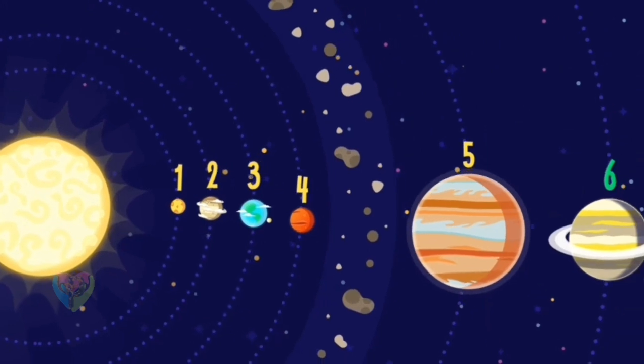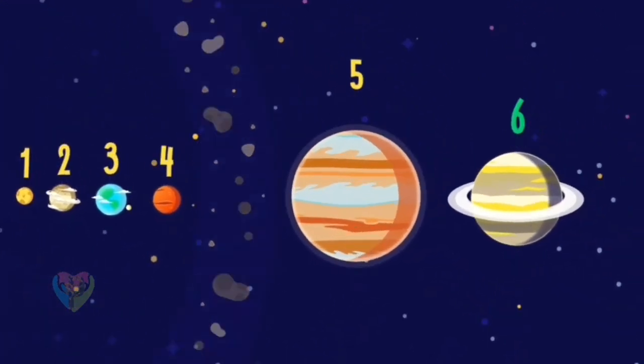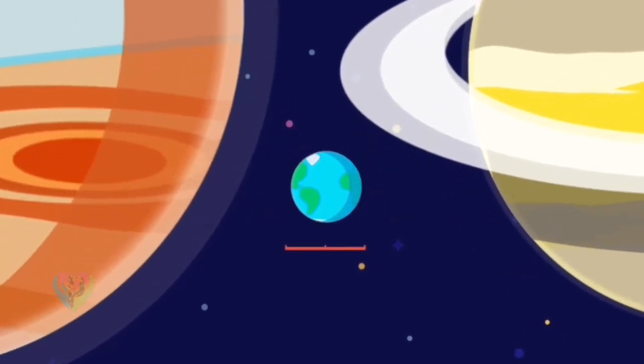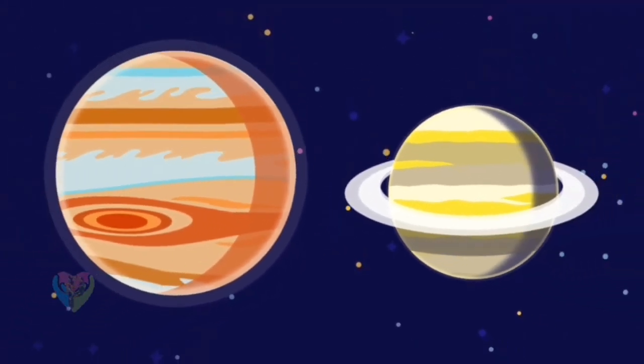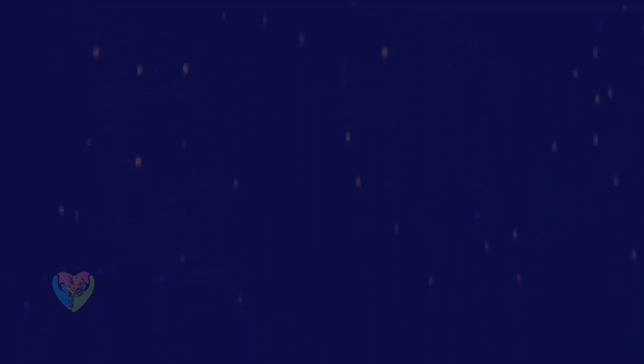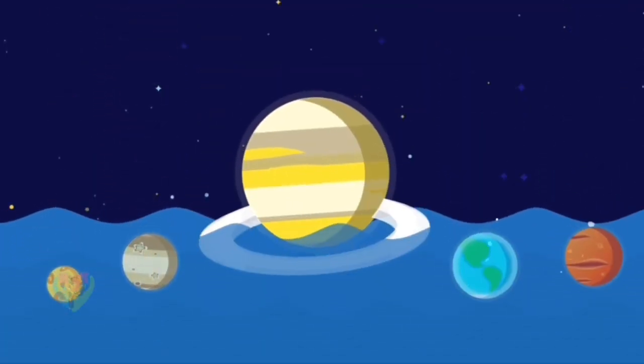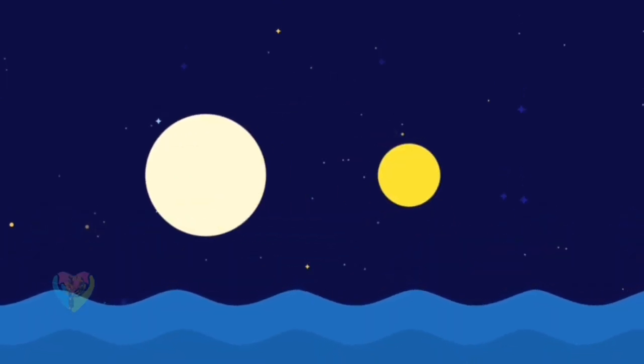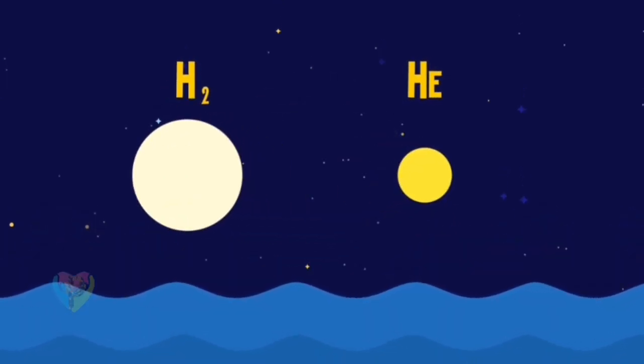Saturn is the sixth planet from the sun, and the second largest planet in the solar system. It belongs to the so-called gas giants, which consist mainly of various gases, and do not have a solid surface. If you could put Saturn into water, it would float to the surface, because hydrogen and helium, which make up a large part of the planet, are lighter than water.